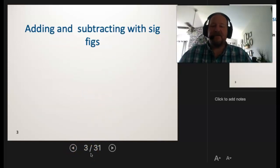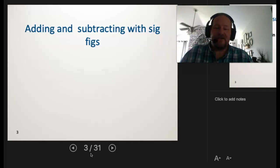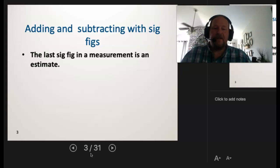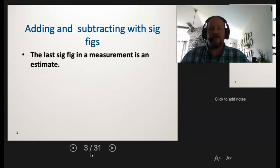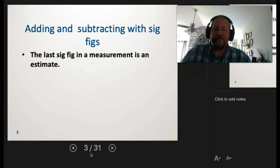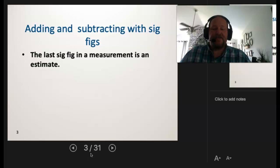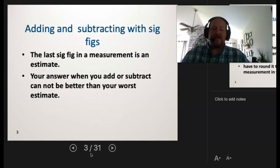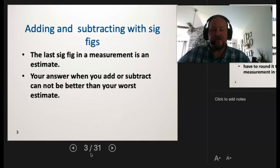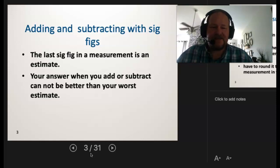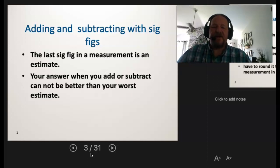Let's do some math with significant figures. Adding and subtracting with significant figures is probably one of the toughest concepts to wrap your mind around. We have to go back to what significant figures mean — a sig fig tells us how good a measurement is, based on the estimate. The last sig fig in a measurement is that estimate. When we add or subtract two measurements, the answer can be no better than the worst estimate.